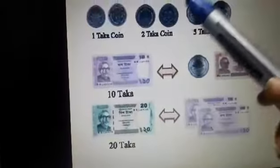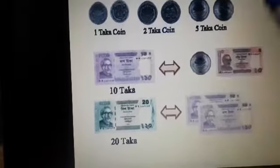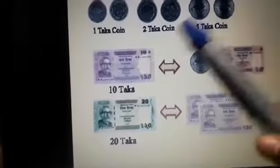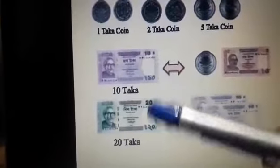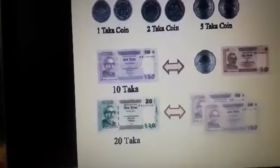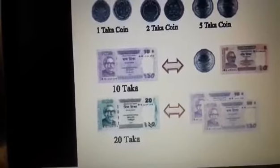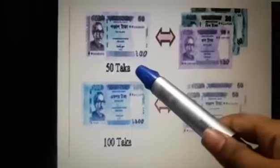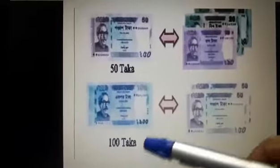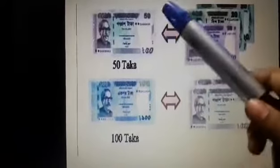1 taka coin, 2 taka coin, 5 taka coin. This is 10 taka, 20 taka, 5 taka note. Here are some also notes: 50 taka and 100 taka.